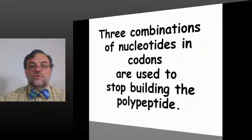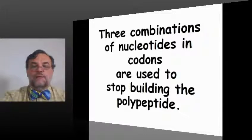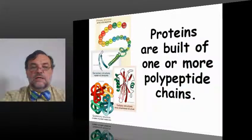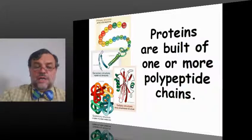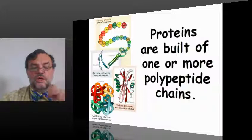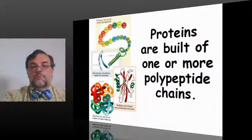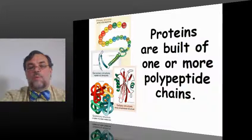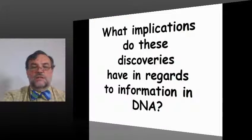Three combinations of nucleotides and codons are used to stop building the polypeptide. We're taking a large view of this. We're obviously not trying to teach you all the details. We just want to reach enough common knowledge and common definitions that we can make some important points. Proteins are built of one or more polypeptide chains.